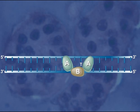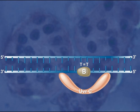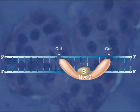The UV-R-B protein remains at the damaged site, while the two UV-R-A proteins are released. UV-R-C then binds to the site and makes two cuts on the damaged strand.